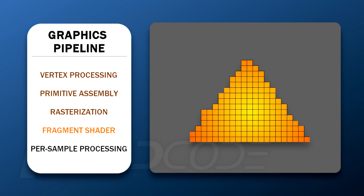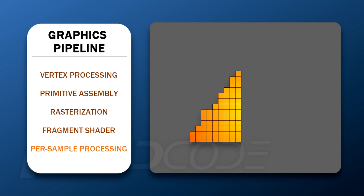As the last step, we have per sample processing, in which the pixel processed in the fragment shader must pass some tests — for example, the scissor test, the stencil test, the depth test, blending, logical operation, write mask, and so on. Based on these tests and operations, the pixel could be rendered, blended, or completely discarded. There are many other things to say about the graphics pipeline, but we will explore most of them throughout the series.